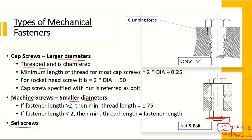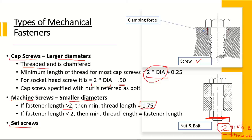For cap screws, the threaded end is chamfered. The minimum thread length for most cap screws is given as two times the diameter plus 0.5 inches; for socket head screws the same formula applies, though the most common practice is to use two times the diameter. For machine screws, if the fastener length is greater than two inches, the minimum thread length must be at least 1.75 inches; if the fastener length is less than two inches, the minimum threaded length equals the fastener length.